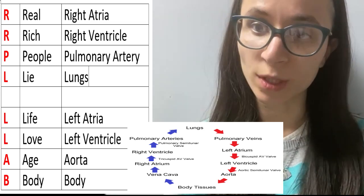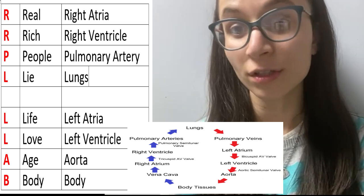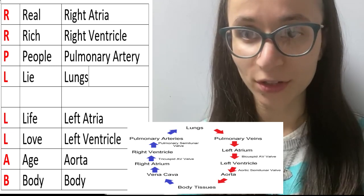From there, where does it go? The next one: R for Rich, and that stands for right ventricle. So from R to R, right atrium to right ventricle.